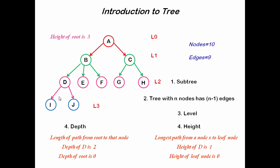So height of root node is 3. Now, what is the height of a tree? Height of a tree is the height of the root node. So the height of this tree is 3.